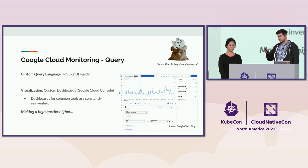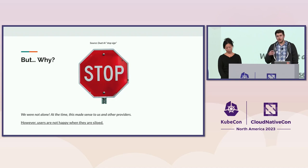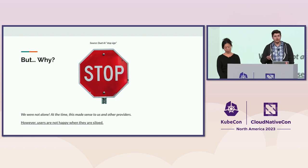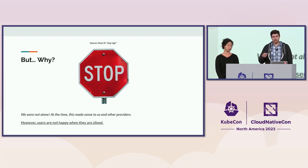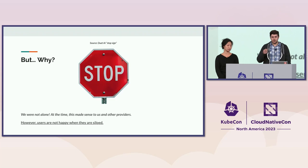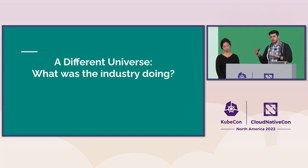This was not very user friendly at all. Let's stop and think about how this happened. This was 2020, and at the time standardization was still happening — when we started Google Cloud Monitoring there was no standardization at all. So what we did is not unique; other cloud providers did the same thing, providing their own APIs, and integration was difficult. Ultimately, users do not want to be siloed, so we thought about what the industry was doing at the time.